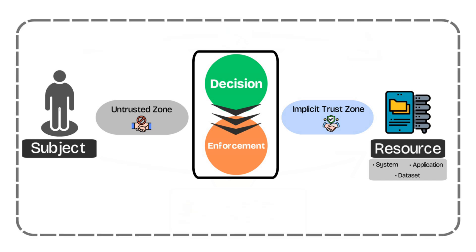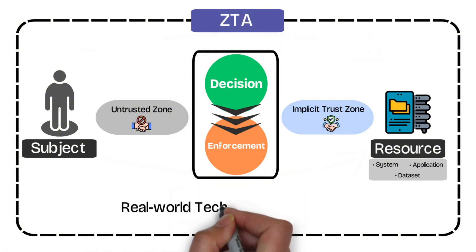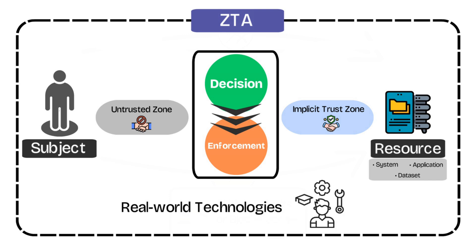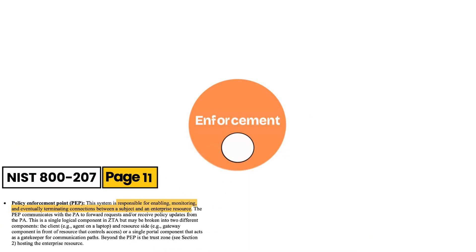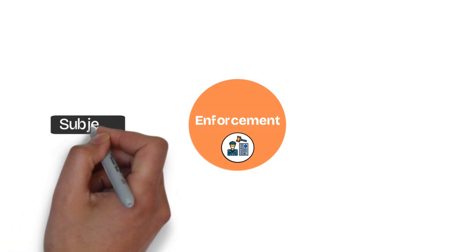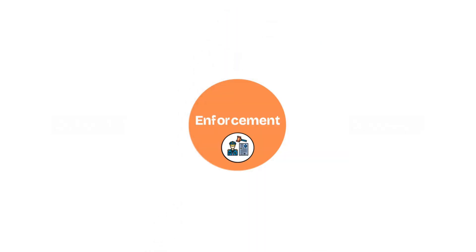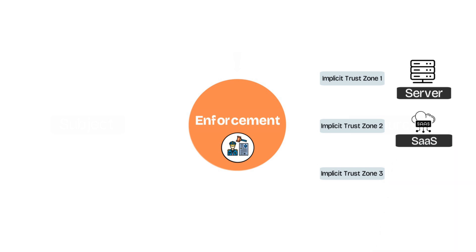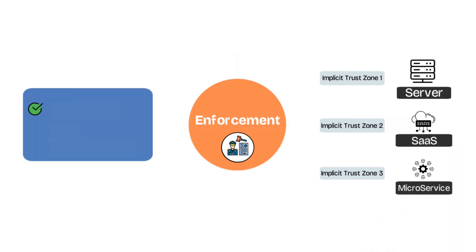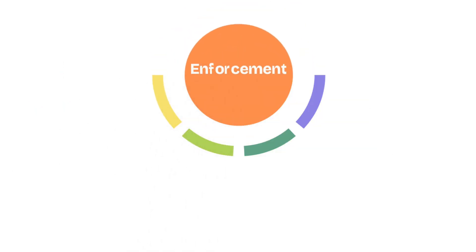At a high level, this diagram represents the core concept framework of a zero trust architecture. Now let's explore how these concepts translate into real-world technologies and how they're actively being implemented in modern environments today. Let's start with the policy enforcement point. In zero trust, the enforcement point is where enforcement actually happens — it's the gatekeeper that sits between the subject and the resource, either allowing or blocking based on the decision made upstream by the decision point. The key here is proximity: the enforcement point should be as close to the resource as possible, whether that's a server in a data center, a SaaS application, or a microservice in the cloud. The closer you enforce access to the service itself, the lower the exposure and the harder it becomes for an attacker to move laterally within your network.